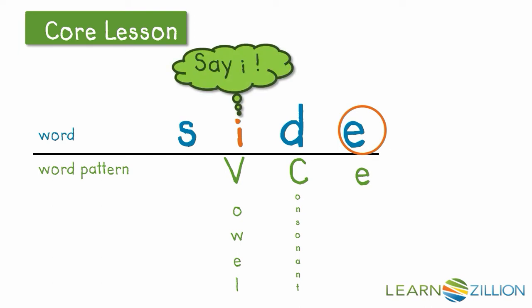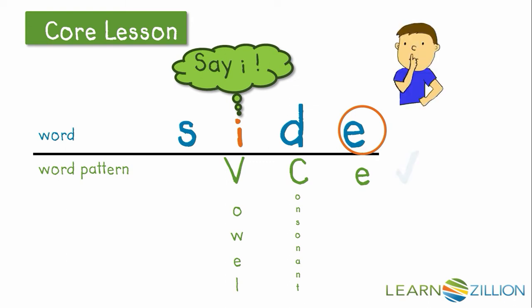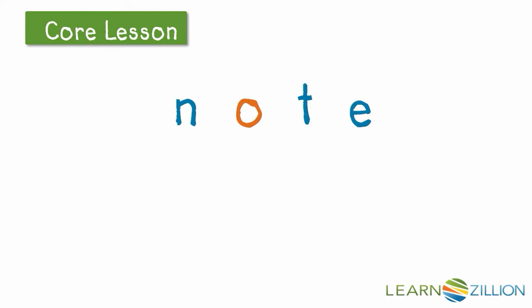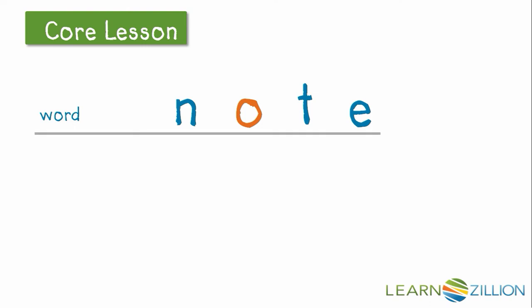It would say its name. So we would read this word side, and the e would stay silent. Let's see if we can figure out this word by using the bossy e strategy and following the VCE word pattern. I have this word here, n-o-t-e.